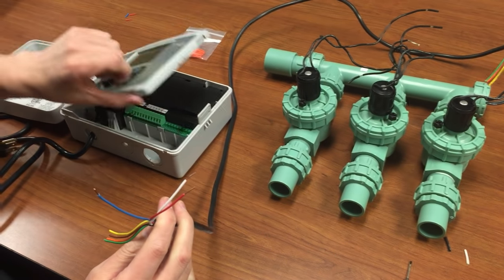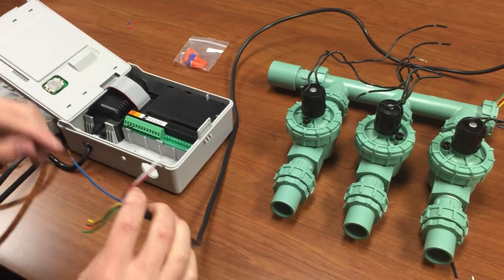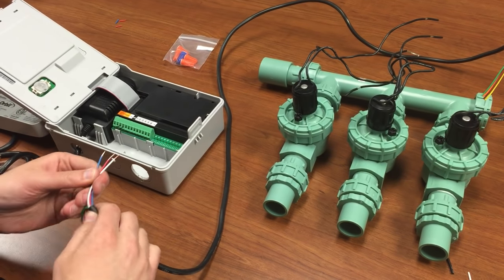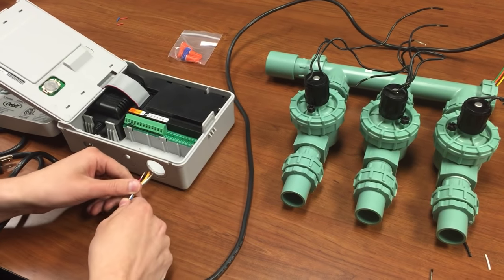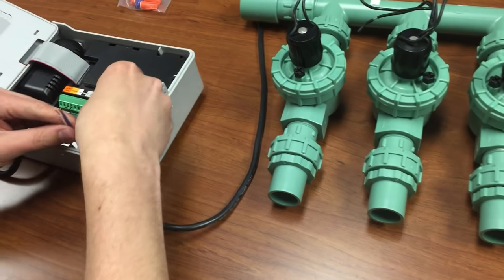When you're doing this, make sure that your timer is unplugged, of course, you don't want to get a jolt. There's electricity going through there. What you're going to do is feed your wires up through the wiring slot in the bottom.